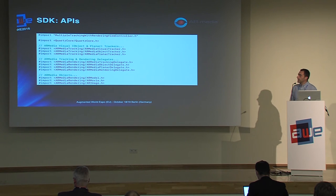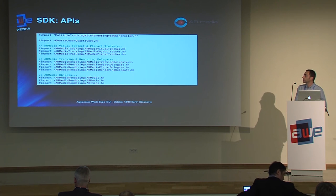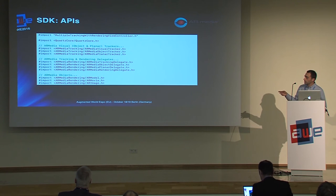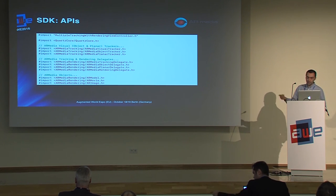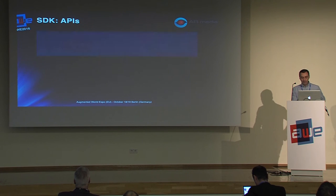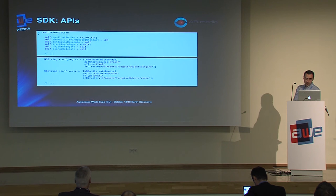Here's an API example related to multiple object tracking. You include both an object tracker and a planar tracker header, plus their respective listeners. The object types you can use for an AR scene include 3D geometries with animations, movies, and images. You set the application key and delegates for the view controller, and you choose configuration files for tracking — in this case two trackers for two different objects.